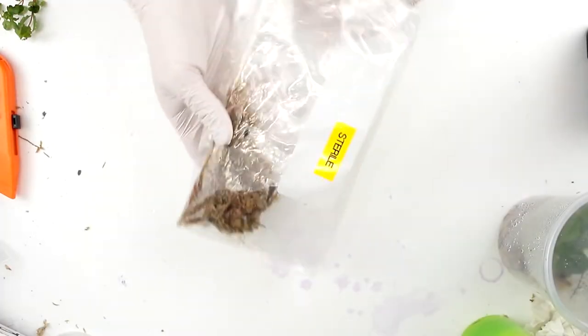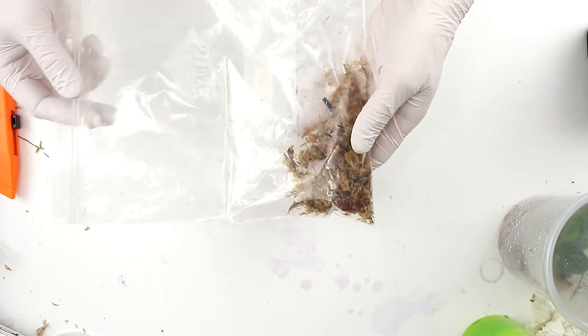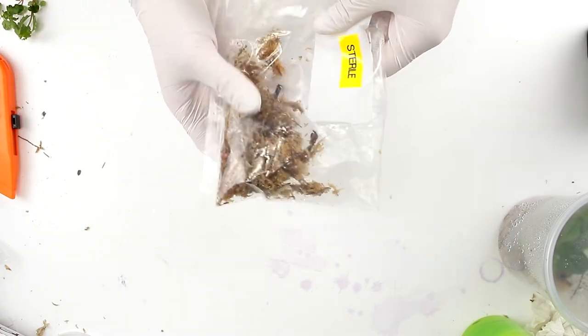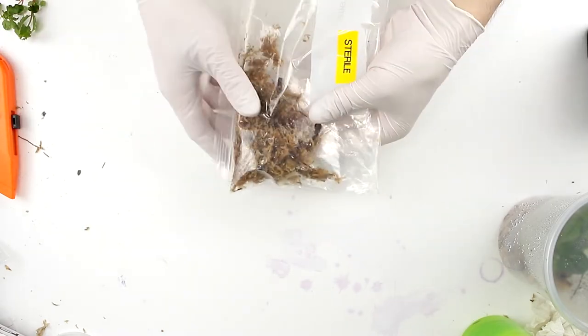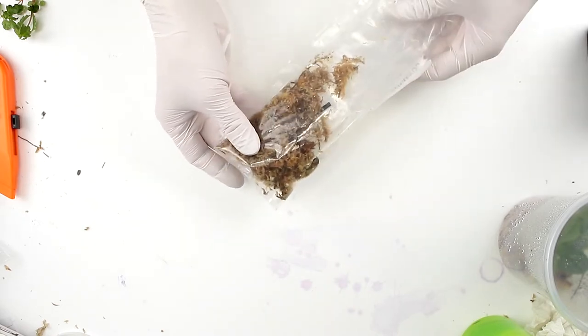Next, you're going to want substrate. In this case, I'm going to use sphagnum moss, and I typically use that for most of my plants. Although you can use other things like soil, gravel, lava rock, and so forth, depending on what plants you're growing.